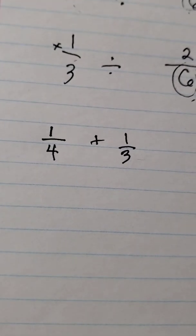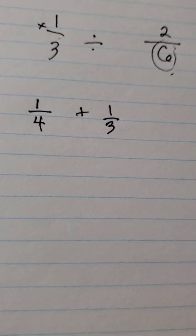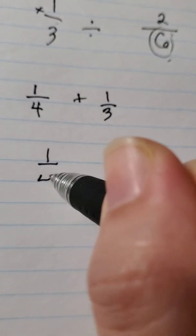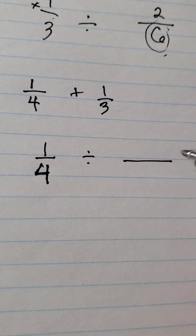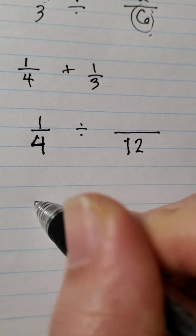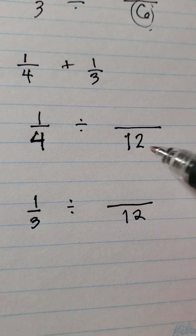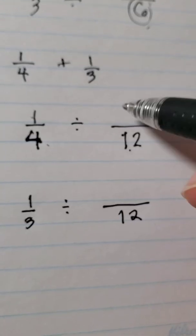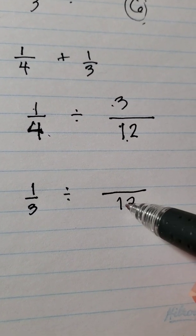We can do 12. So 1 over 4, this is your common denominator is 12. Then 1 third, common denominator is 12. So 12 divided by 4 is 3 times 1 equals 3 over 12.